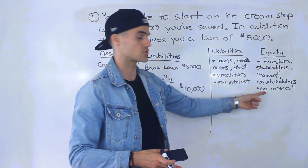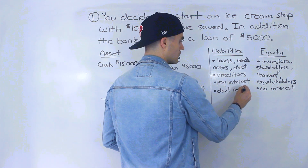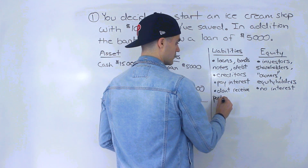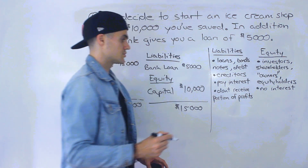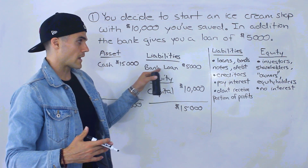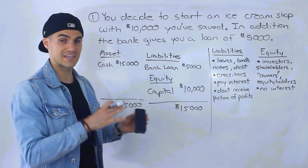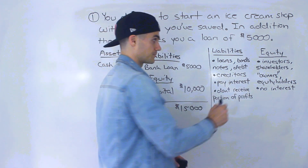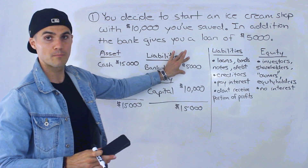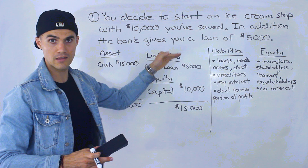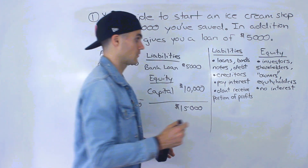Well, no — because creditors don't receive a portion of profits. So if this business grows, the creditors are going to continue getting interest, but they're not going to receive any portion of the profits. While the equity holders and investors — if we take your ice cream shop and it grows, it's not like you're going to owe the bank more money. The loan stays at $5,000, you keep paying interest and pay back the principal, but your portion of the equity is going to grow.